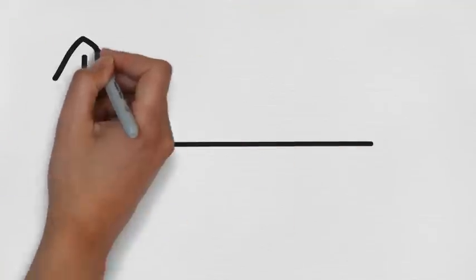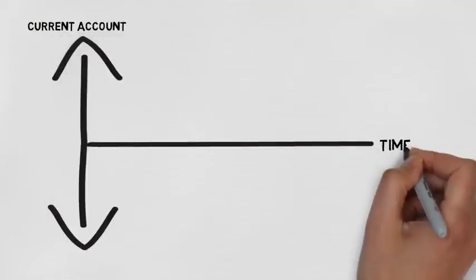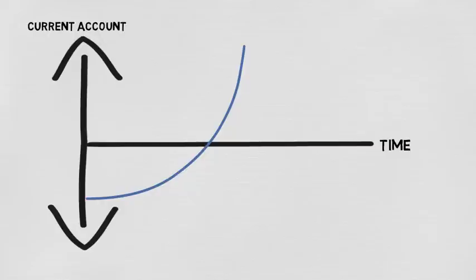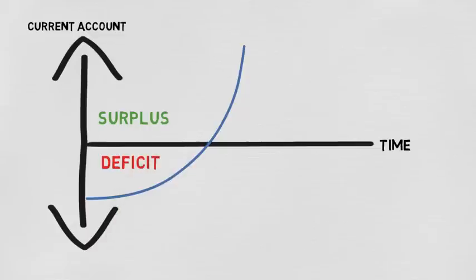The evolution of the current account following a real depreciation of the exchange rate, as illustrated by the J-curve, shows how in the short run the Marshall-Lerner condition generally does not hold, because the price effect dominates the volume effect. However, in the long run the condition holds and there is an improvement in the current account, leading to a surplus.